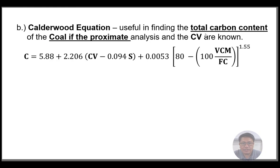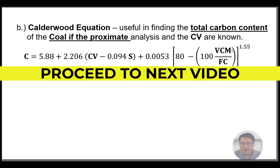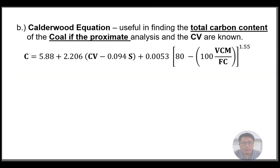The Calderwood equation is useful for finding the total carbon content of coal if the proximate analysis and calorific value are known. It is: C = 5.88 + 2.206·(calorific value) − 0.094·S + 0.0053·[80 − 100·(VCM/FC)^1.5]. This defines the characteristics of solid fuels, and in the next video we will proceed to sample problems.